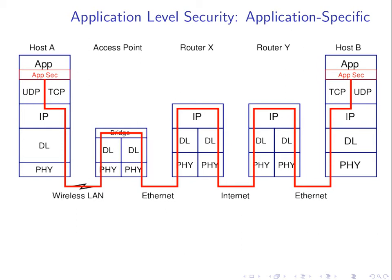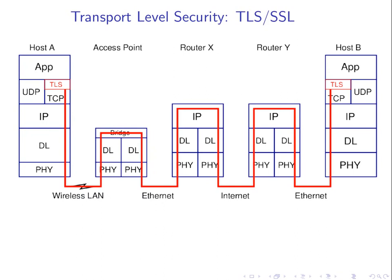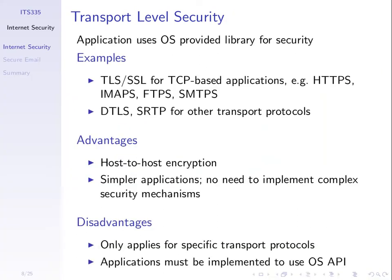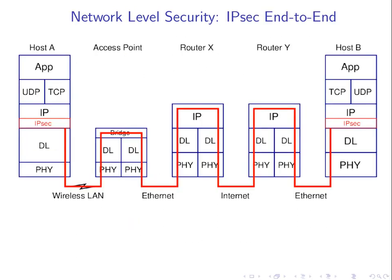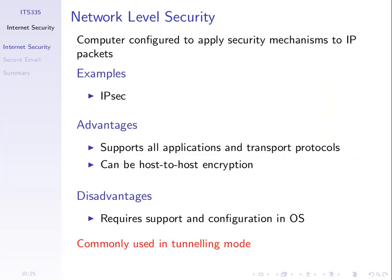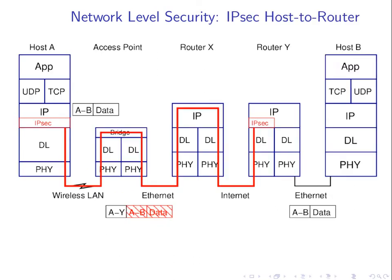Router Y is the router of the server that I'm trying to contact, host B. We're looking at how do we keep our data confidential across the entire path. We saw that application layer security and transport layer security both provide end-to-end security. Network level security can be end-to-end but is harder to configure — it requires operating system configuration. IP sec is commonly used in tunneling mode.